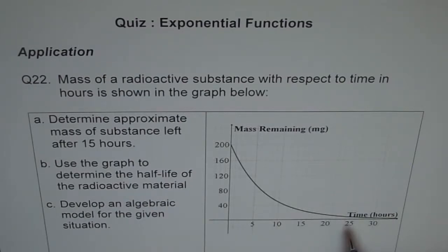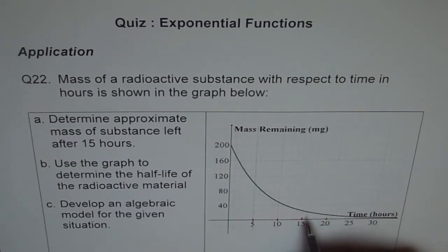So here the units are: this is 5, this is 10, and this is 15 for us, then 20 like this. So 15 is very difficult to read here. This is 40, this is 20.